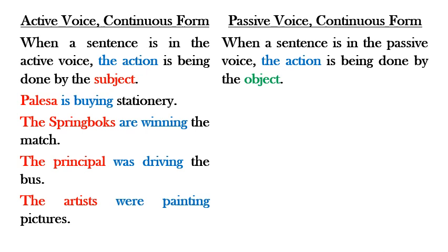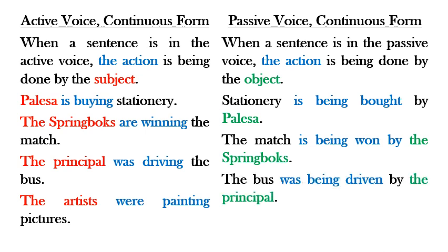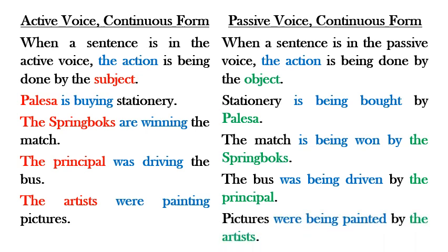Now let's look at the continuous form in the passive voice. 'Stationery is being bought by Palasa' — it's happening right now. 'The match is being won by the Springboks' — happening right now. 'The bus was being driven by the principal' — it was in progress back then. And 'Pictures were being painted by the artists' — something that was in progress at that time.